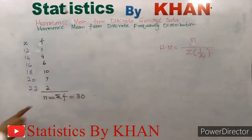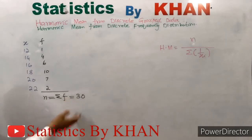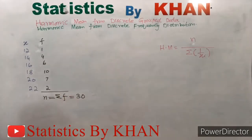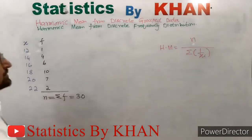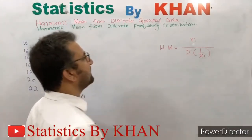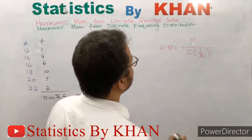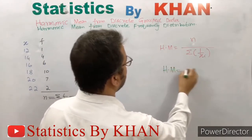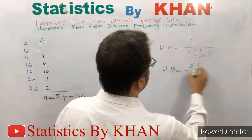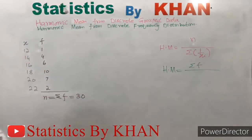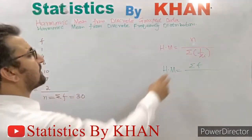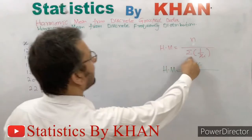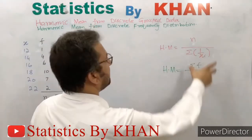Summation f equals 30, meaning there are 30 total observations. Since n equals summation f, in the harmonic mean formula we can replace n with summation f. Therefore, the harmonic mean equals summation f divided by the denominator expression.